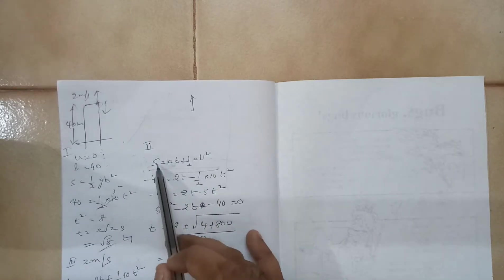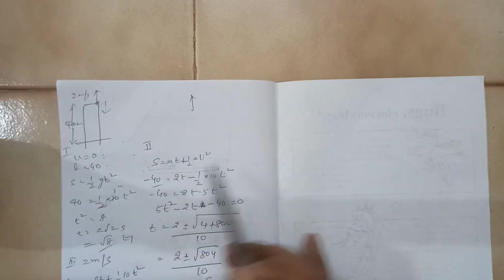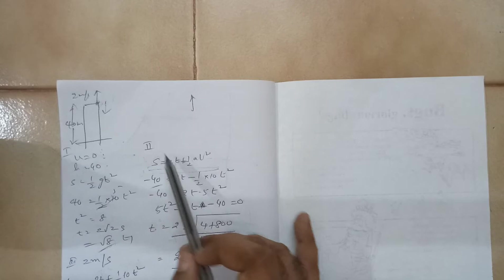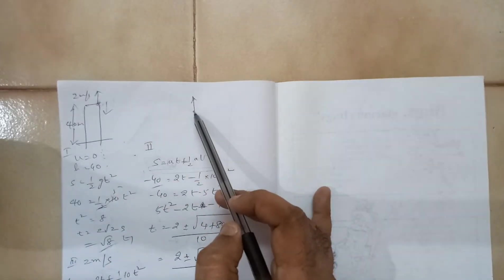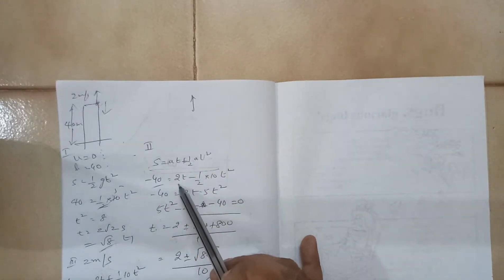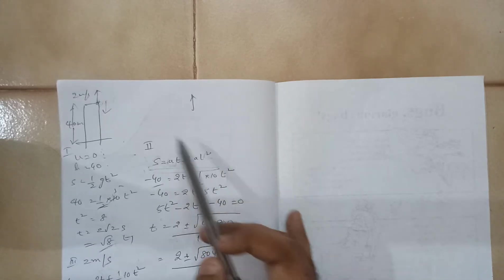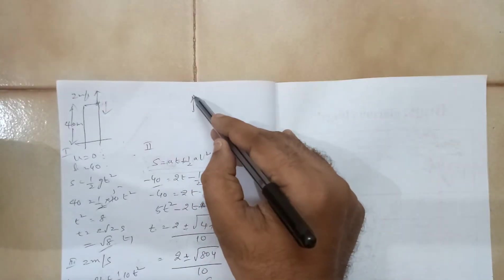So the displacement is in the downward direction. So if you use the same formula, S will become minus 40. So initial speed was 2. Upward, you have considered positive.